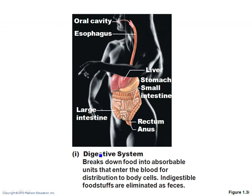The digestive system is basically one long tube through your body — starting in the mouth, going down the esophagus, into the stomach, then the small intestine, then the large intestine, and whatever waste is left goes out the rectum and anus. Associated organs include the liver, gallbladder, and pancreas. The function is to break down food and absorb it into the bloodstream so we can get nutrients from it.